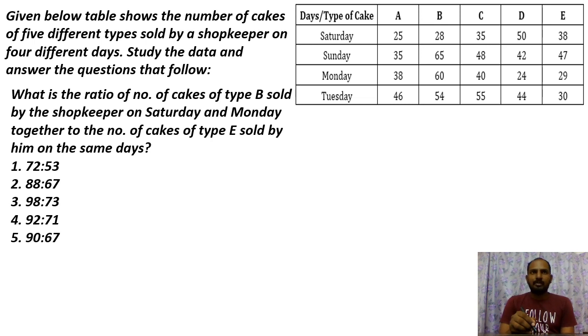The given table shows the number of cakes of five different types sold by a shopkeeper on four days. There are five different types: A, B, C, D, E. And these are sold across four days in any category.